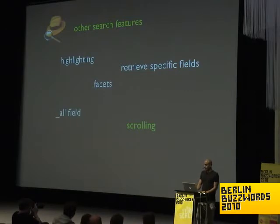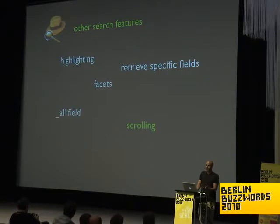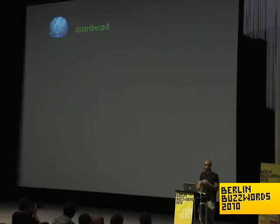Within the search body you can define other features like highlighting, facets, retrieve specific fields you want to get. There's an 'all' field that searches on all your data without pre-specifying fields. It can also do scrolling of search requests. That's basically the 'your data, your search' part.